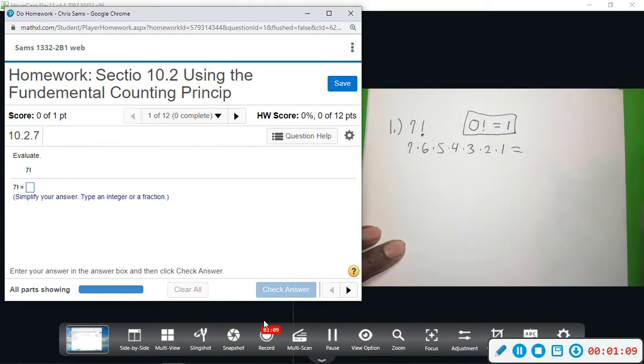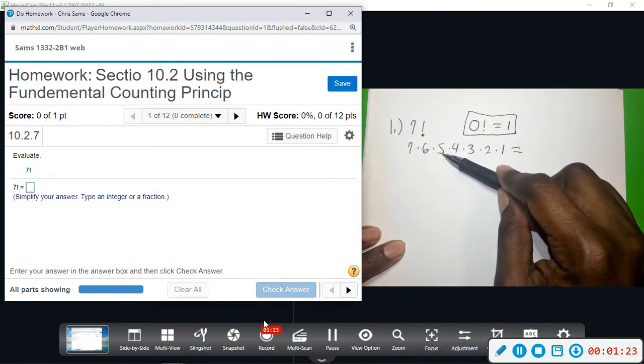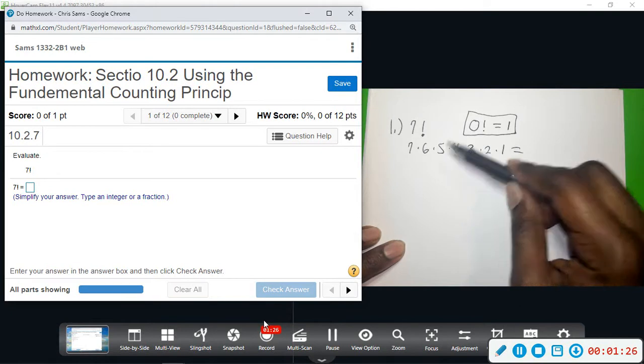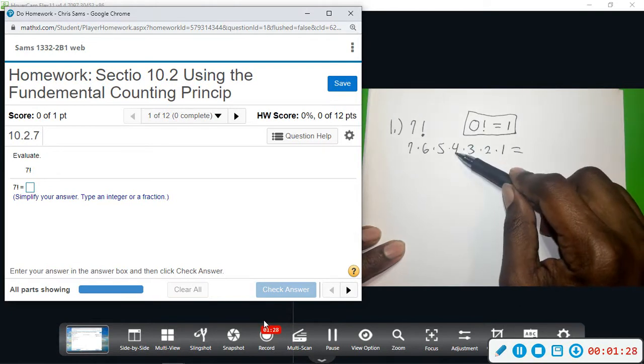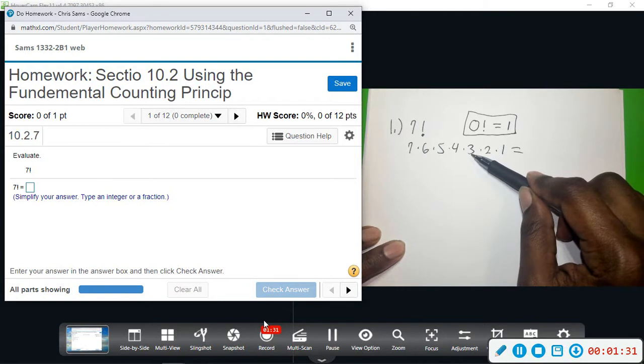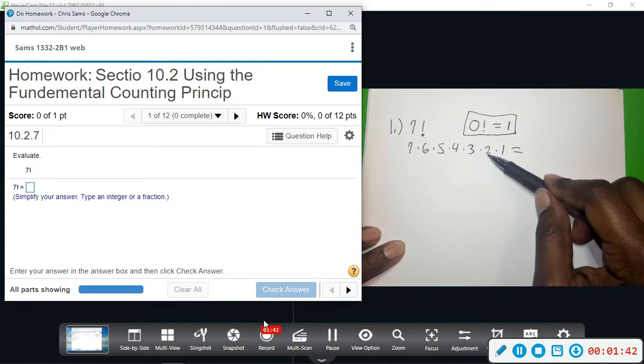So if we multiply 7 times 6 times 5 times 4 times 3 times 2 times 1, we get 42, then 42 times 5 is 210, times 4 is 840, times 3 is 2520, and then 5040.